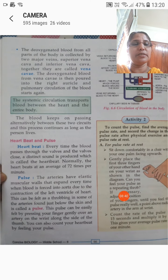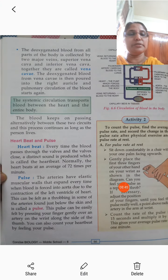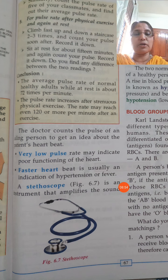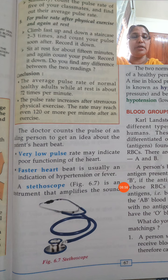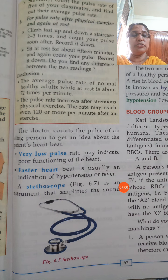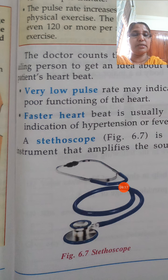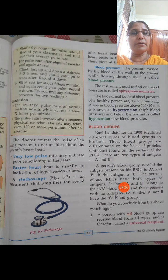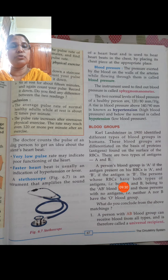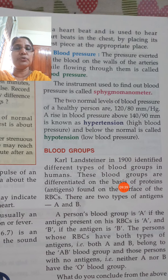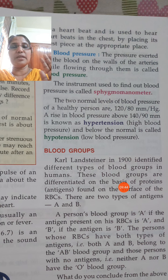How can we feel the pulse or the heartbeat? A very low pulse indicates poor functioning of the heart. A faster heartbeat indicates hypertension or fever — at the time of hypertension or fever, the heartbeat will be faster. The instrument used to hear the heartbeat is the stethoscope. Doctors use it to examine heart functioning and count how many times per minute the heart beats. Blood pressure is the pressure exerted by blood flowing through the arteries on the walls of the arteries, which are thick.